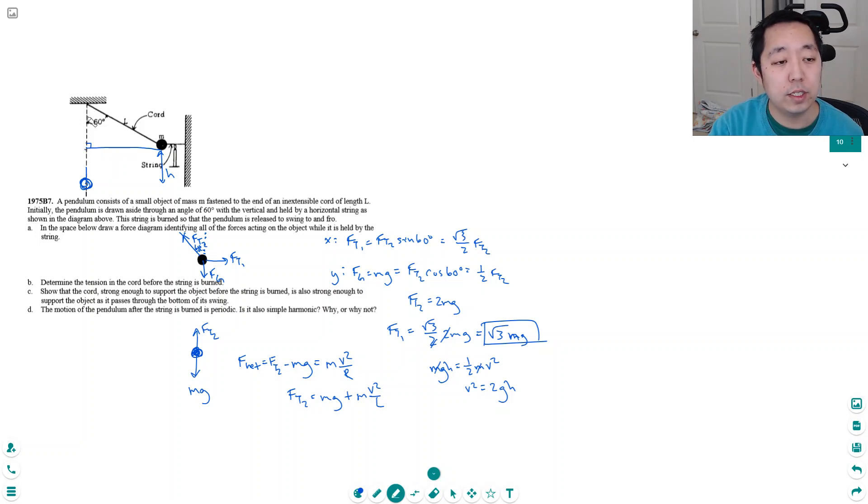This whole distance here is l because it's the same string that's swung down. I know this portion of it, and if I know this portion, then I can subtract the two. This portion is l cosine 60 degrees, which is l times root 3 over 2. So h is l minus l times root 3 over 2, because this portion here is l root 3 over 2, given by this triangle setup.